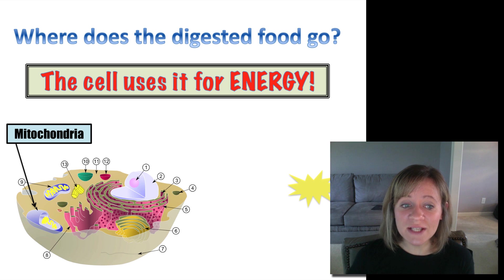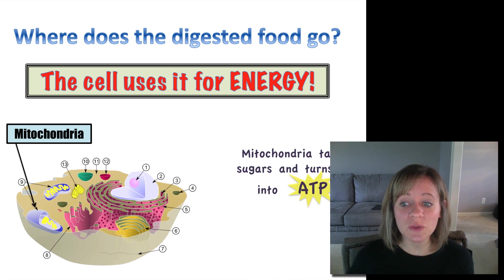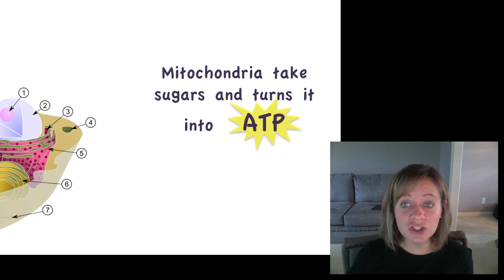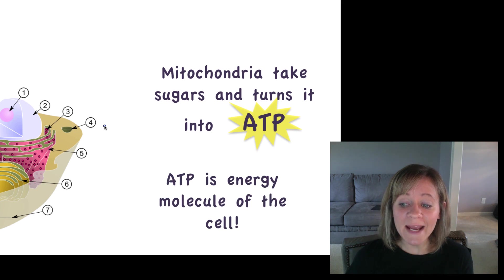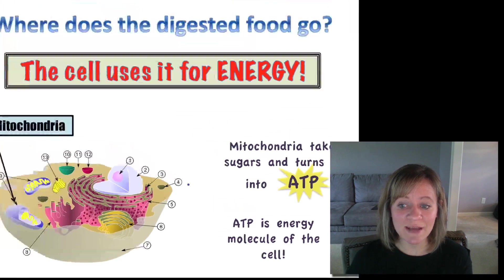And in animal cells and plant cells, the mitochondria is the organelle that is going to make energy. So it's going to take the sugars that you eat, remember sugars are simply carbohydrates and glucose, and it's going to take that in and turn it into ATP. And we're going to learn all about how the mitochondria does that in our next unit on energy. ATP is the energy molecule of the cell. It stands for adenosine triphosphate, and so we'll look at how ATP is made next unit.